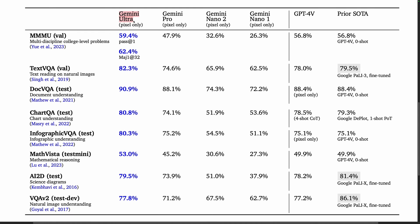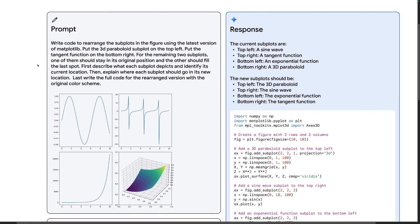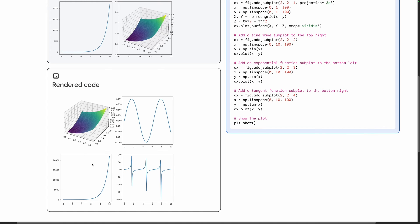Now we come to multimodal results. Gemini Ultra is pretty strong, outperforming the previous state of the art across each of the benchmarks shown here, including the recent MMMU benchmark. Comparing Gemini Ultra with GPT-4V when they both use the PARSE1 metric, we see a few points of aggregate improvement, though the performance differences are somewhat subject-specific. Here's a qualitative example: the model is given a set of four plots, asked to explain what they are, then provide code that rearranges them, which it is able to do mostly successfully. There's a minor bug in that the y-axis has changed, but overall it's pretty solid.